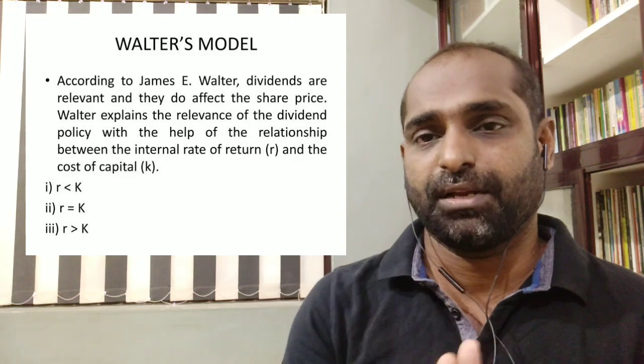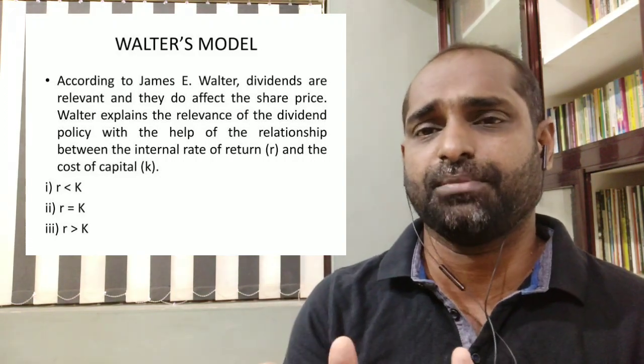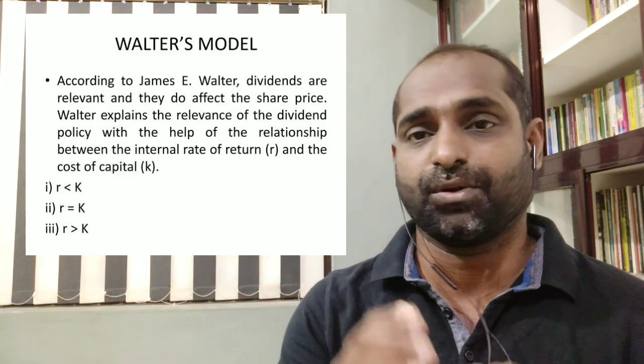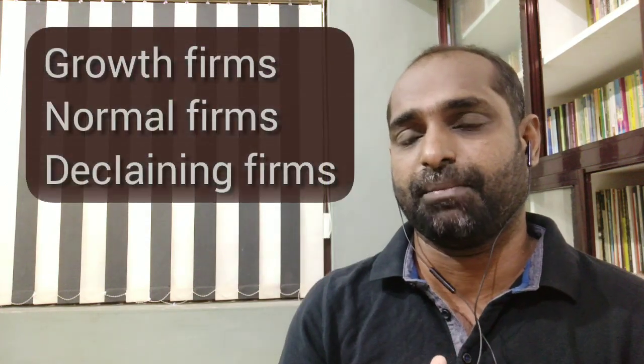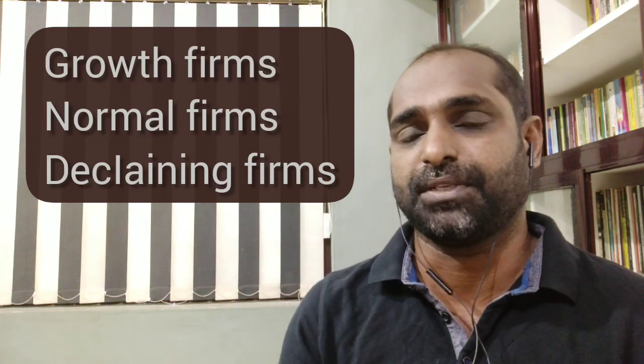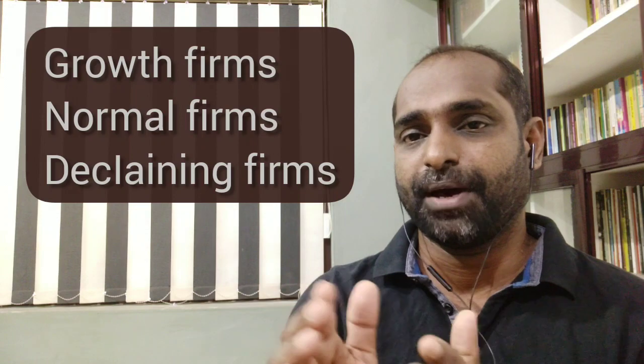The third type is Declining Firms, where R is less than KE. So to summarize: Growth Firms have R greater than KE, Normal Firms have R equal to KE, and Declining Firms have R less than KE. These three firm types each have a different dividend policy approach under Walter's model.